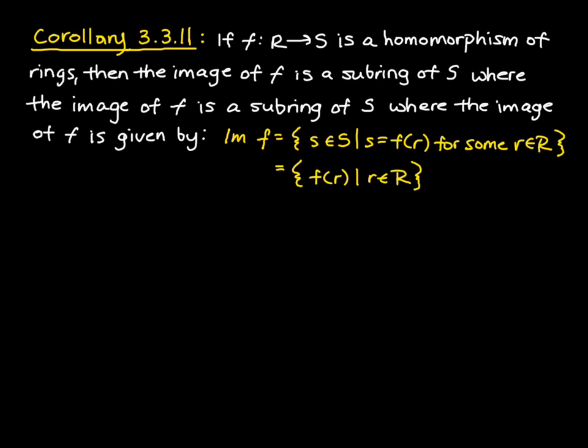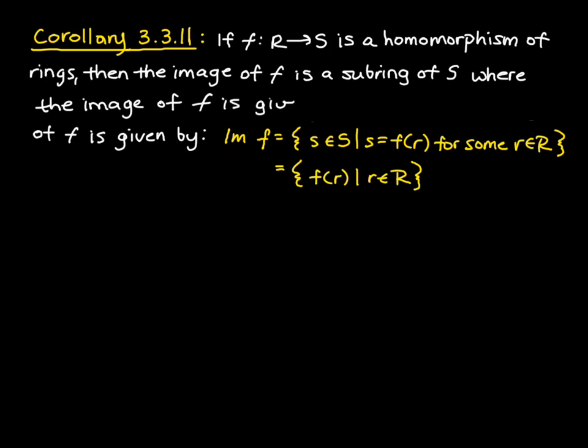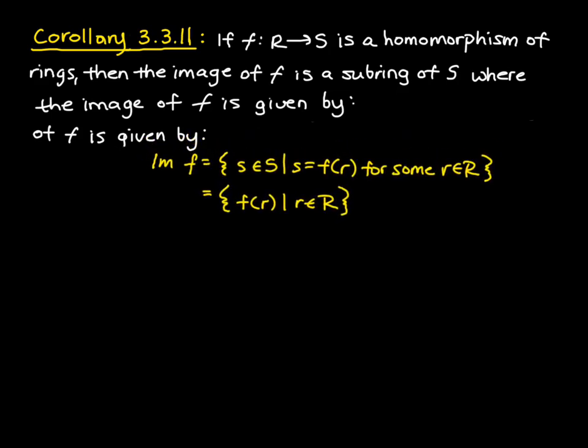So we don't always have this in general. We get this, so we don't always have that the image of f under R is a subring, but we do get this if f from R to S is a homomorphism.